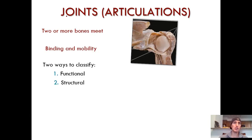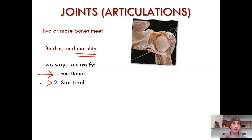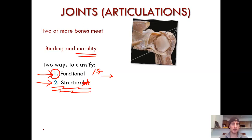There are two ways that joints are typically classified, and we're going to knock them out one by one. The first way you can classify joints is by their function, or by the level of mobility that they may or may not have. The second one is structural, and a lot more emphasis is put on this one. Let's do the functional breakdown first, and then we spend a lot more time on the structural. But you've got to know both.